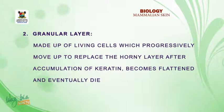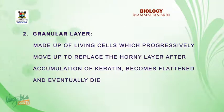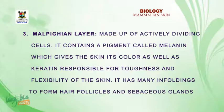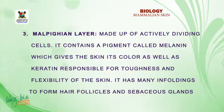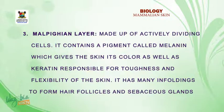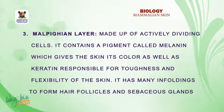The granular layer is the second layer of the epidermis. It is made up of living cells which progressively move up to replace the cornified layer after accumulation of keratin. The third layer is the Malpighian layer. This layer is made up of actively dividing cells. It consists of a pigment called melanin, which gives the skin its color, as well as keratin, responsible for the toughness and flexibility of the skin. It has many infoldings to form hair follicles and sebaceous glands.